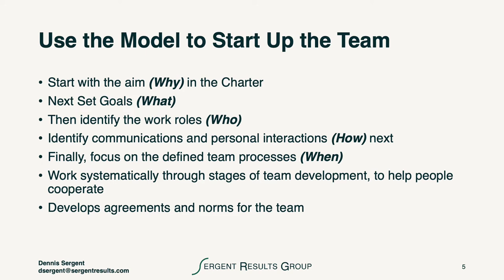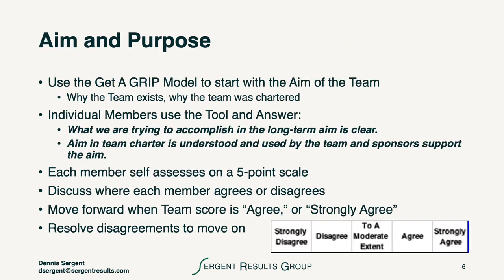It's important to help us align the why, the what, the who, the how, and the when with our team aim. The aim and purpose is where we start in the Get-A-Grip model. It's why the team exists and why the team was chartered. Individual members can use the tool and answer, for example, these two fairly fundamental questions.